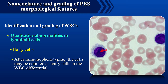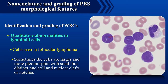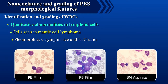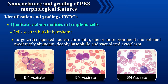Cells seen in follicular lymphoma are often small with scanty weakly basophilic cytoplasm and have nuclei with notches or deep narrow clefts; sometimes the cells are larger and more pleomorphic with small but distinct nucleoli and nuclear clefts or notches. Cells in mantle cell lymphoma are pleomorphic, varying in size and N:C ratio; chromatin condensation is less than in CLL lymphocytes and some cells may appear blastic with cleft or irregular nuclei and a prominent nucleolus. Cells seen in Burkitt's lymphoma are large with dispersed nuclear chromatin, one or more prominent nucleoli, and moderately abundant, deeply basophilic and vacuolated cytoplasm.